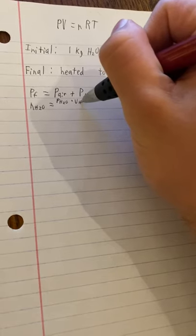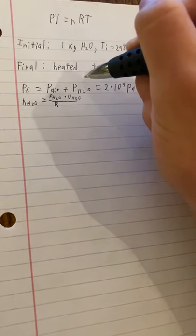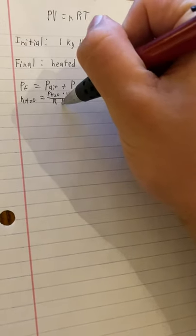So going more into depth of the pressure of the H2O, we can know the moles of H2O equals the pressure of water times the volume of the water all over the gas constant R and then the temperature. And we also know that the moles of the water is 0.3 moles, so we can also set this equal to 0.3 moles.